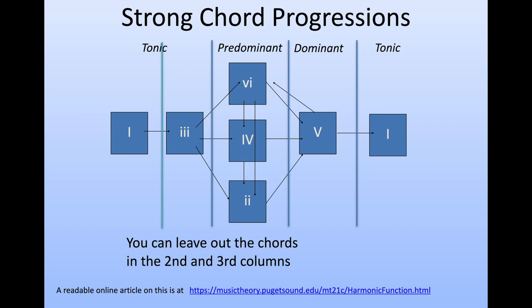It is possible to leave out the second column with the three in it, and the third column with the six, four, and two in it — so then we just get one, five, one. But if we want to, we can follow the arrows and play the chords that we come across. So we can go from one to three, to six, to two, to five, to one.